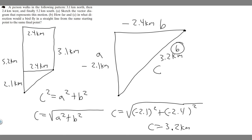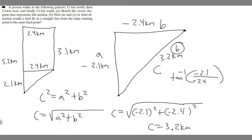Now let's do Part C. In order to find the direction the bird would fly, we need to find an angle. We take the arctangent of the y-component over the x-component: arctan(−2.1 / −2.4). If you do this, you get 41.189 degrees — I'll round it to 41.19 degrees. You can round however you want, but that's the angle.